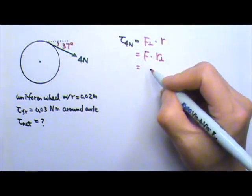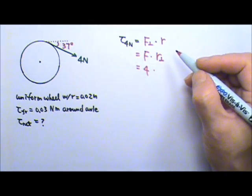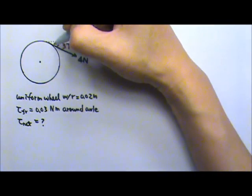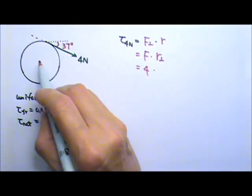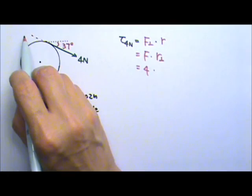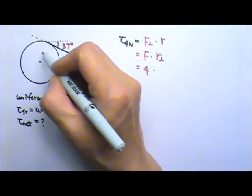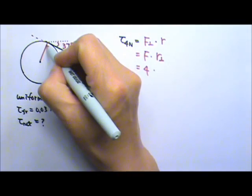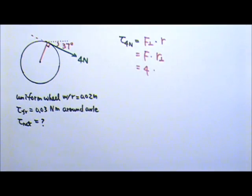The force is 4N. The lever arm is the distance between the line of force and the axis, so we can extend this line and the distance between the line of force and the axis will be this perpendicular distance right here. What do you think this lever arm is?